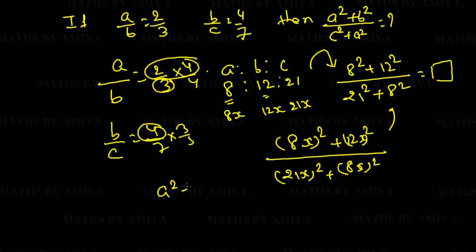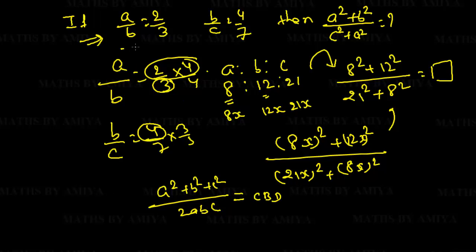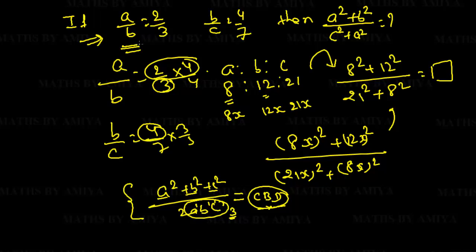Now, can we solve A² + B² + C² upon 2ABC from the given values? No — the answer should be 'cannot be determined.' For getting a ratio from another ratio, the most important thing is that the degree of all terms must be the same. Here A² has degree 2, B² has degree 2, but 2ABC has degree 3. If we have different degrees in different terms, the answer cannot be determined, so we need an extra condition.